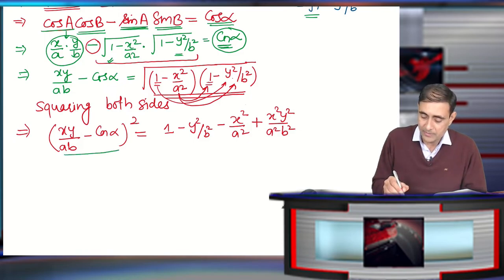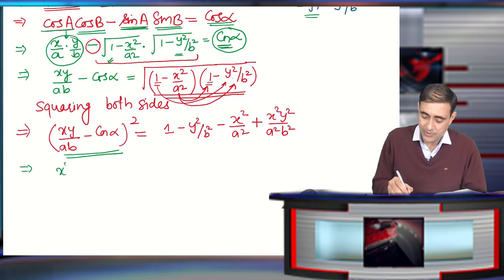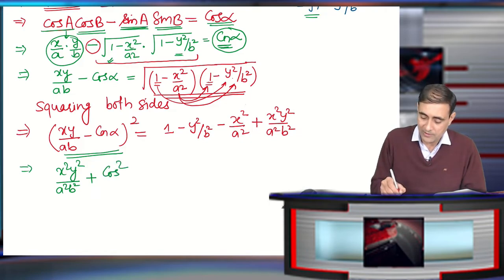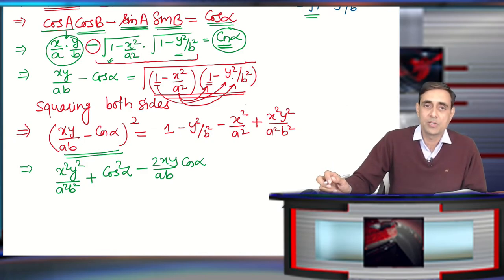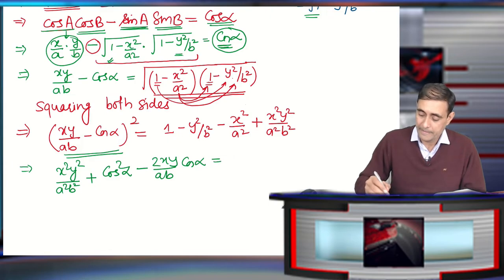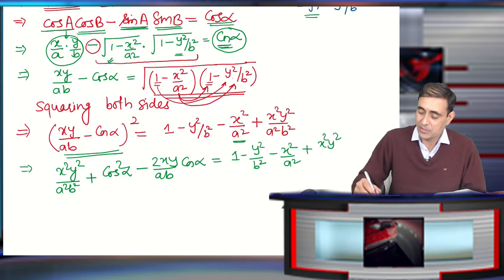Expanding the left side using the (a−b)² identity: x²y²/a²b² + cos²α − 2xy/ab·cosα. So we have: x²y²/a²b² + cos²α − 2xy/ab·cosα = 1 − y²/b² − x²/a² + x²y²/a²b².